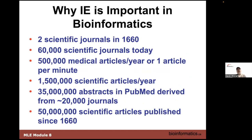Why is information extraction important? If you were around in 1660, you only had to read two scientific journals. Right now there are about 60,000 scientific journals. There are about 500,000 medical articles per year, and if you include all scientific articles, 1.5 million are published. PubMed captures a good portion with about 35 million abstracts from 20,000 journals, covering one third of the scientific journal population. In just the last 40-50 years, 70% of all scientific articles have been published — climbing exponentially.